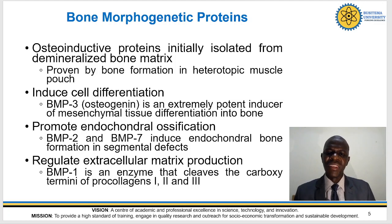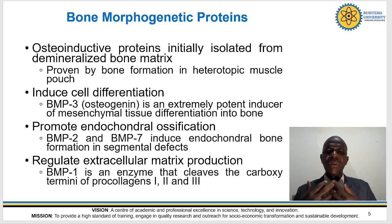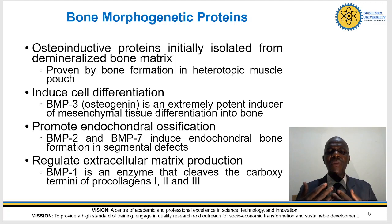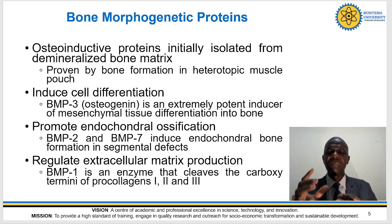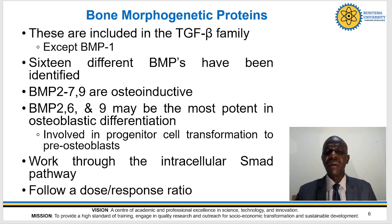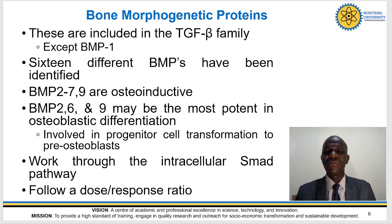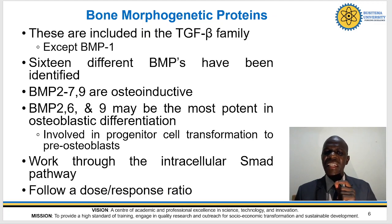BMP1 helps in cleavage of the carboxyl terminal of procollagens 1, 2, and 3, which is important in collagen synthesis. BMPs are included in the TGF-beta family except BMP1. Sixteen types have so far been described. BMP2, 7, and 9 are osteoinductive; BMP2, 6, and 9 may be the most important in osteoblastic differentiation, involved in progenitor cell transformation into pre-osteoblasts.